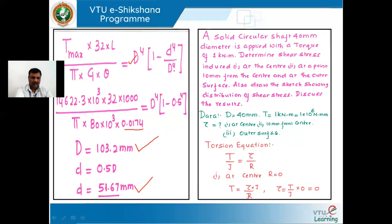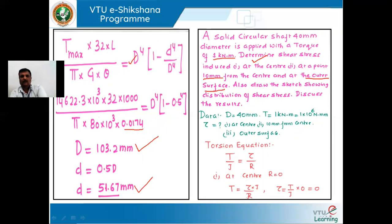This is a very important problem on designing solid and hollow shafts. Now for the next problem: a solid circular shaft of 40 mm diameter is applied with a torque of 1 kilo-newton-meter. Determine the shear stress induced at three points: at the center of the shaft, at a point 10 mm away from the center, and at the outermost surface. Also draw the sketch showing shear stress distribution and discuss the results.